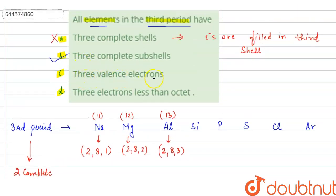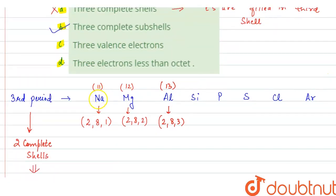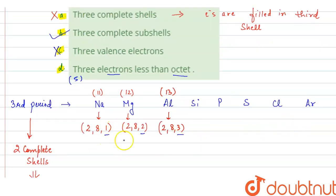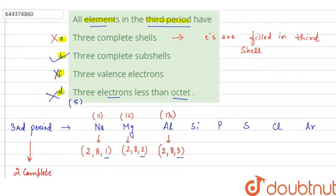In option C, it says three valence electrons — this is also wrong. Sodium has one valence electron, magnesium has two, aluminium has three, so each element has a different number of valence electrons. In option D, it says three electrons less than octet — this is also wrong. Three electrons less than octet means 8 minus 3, which is 5, and each element has a different number of electrons in its valence shell. So the correct option is option B: three complete subshells. Thank you.